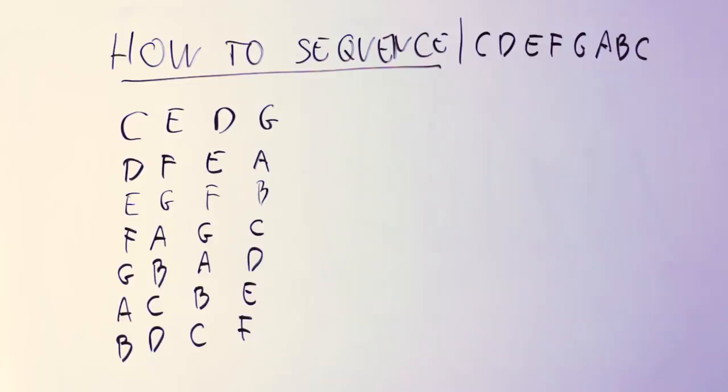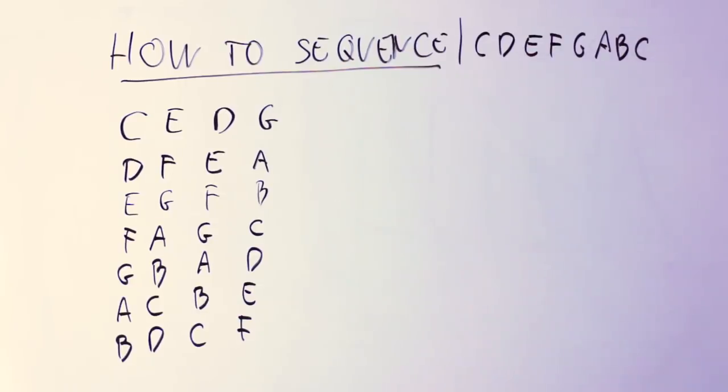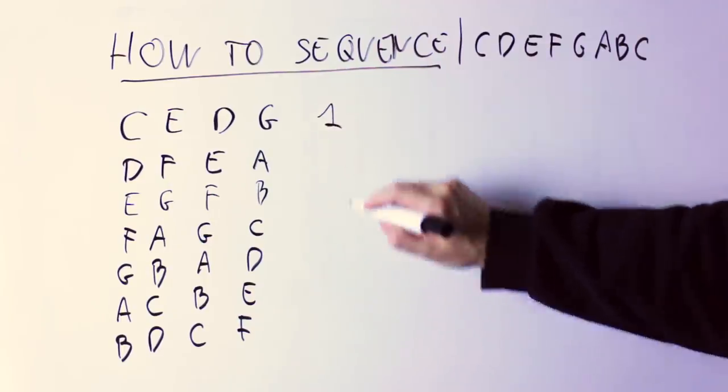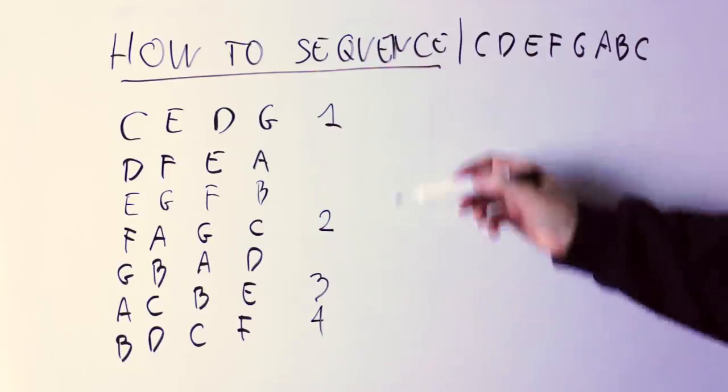So now I have seven different variations of the melody, one starting from C, one starting from D, one starting from E, etc. Now I don't have to play those seven variations in order. I can play them going up, I can play them going down, but I can also jump back and forth between them. So I can play the one starting from C, followed by the one starting from F, followed by the one starting from A, followed by the one starting from B.